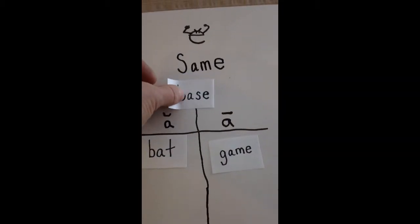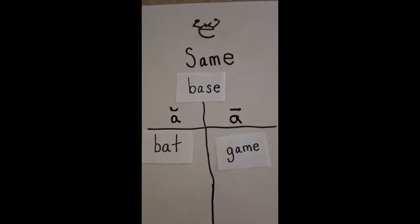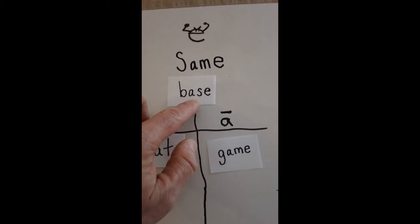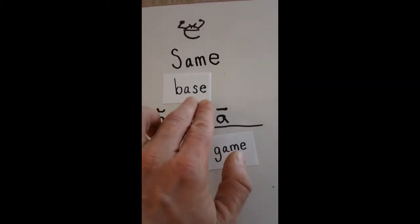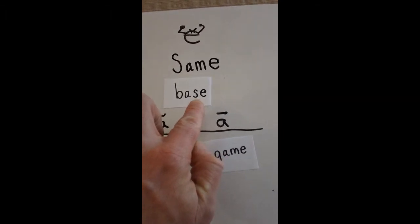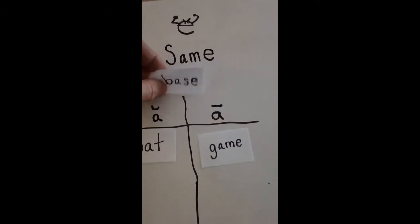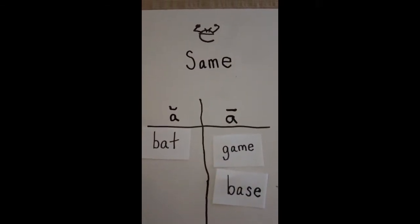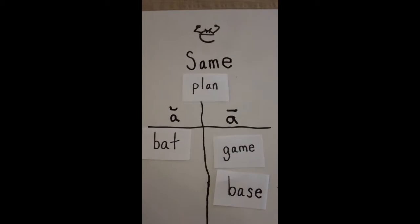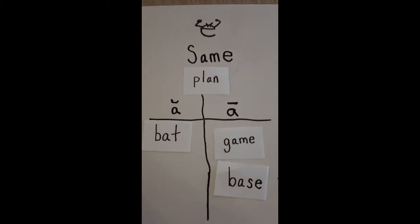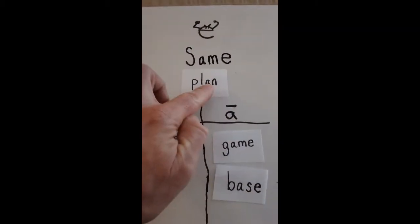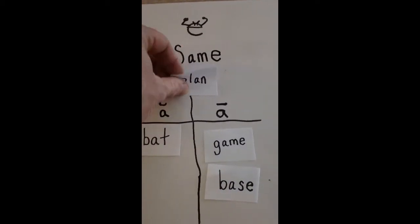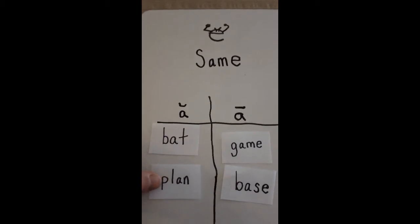With this word from the story, base, there's a bossy E again. So instead of saying a short A, the A will say its name: A. B-A-S-E. Base. So it will go on this side with the long A. With the word plan, there is no bossy E, so the A will just say its short sound of A. Plan. And it will stay on this short A side.